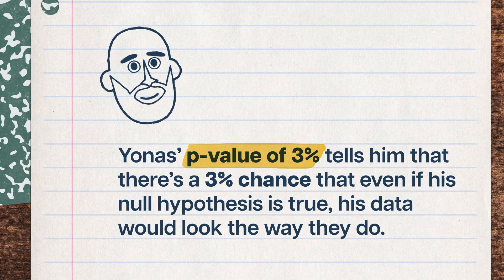No matter what, deciding if we believe our alternative hypothesis should come from other kinds of statistical investigations. A p-value is not the probability that the null hypothesis is true. A p-value is the probability of getting data like this — or more extreme — if we've already assumed the null hypothesis is true. Jonas's p-value of 3% tells him that there's a 3% chance that even if his null hypothesis is true, his data would look the way they do. Hypothesis testing can't tell us for sure whether our hypotheses are true; it can only check how plausible the data we have are under different assumptions. The p-value by itself can't tell you the whole story — you've got to use statistical tests, your knowledge of the data, and some good old common sense to get as close to the truth as you possibly can.